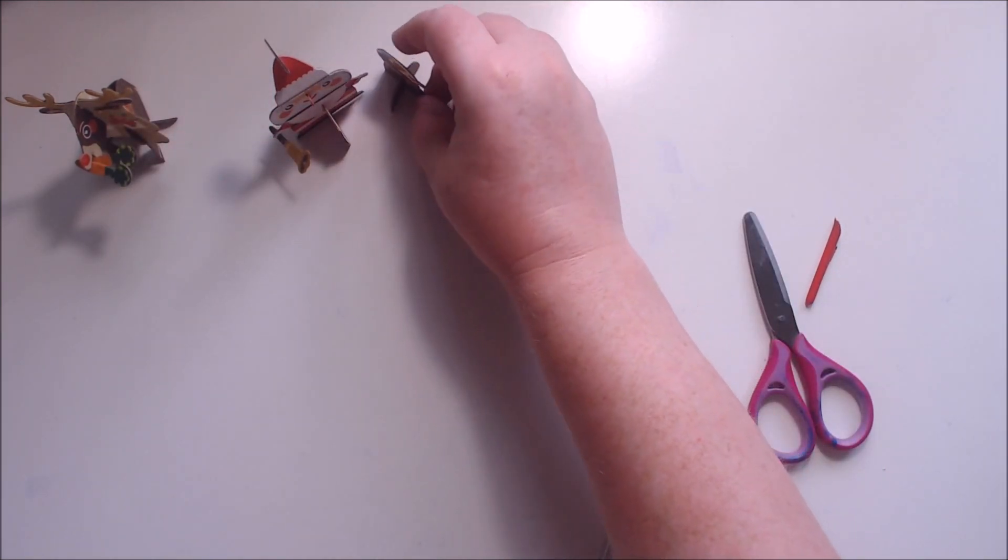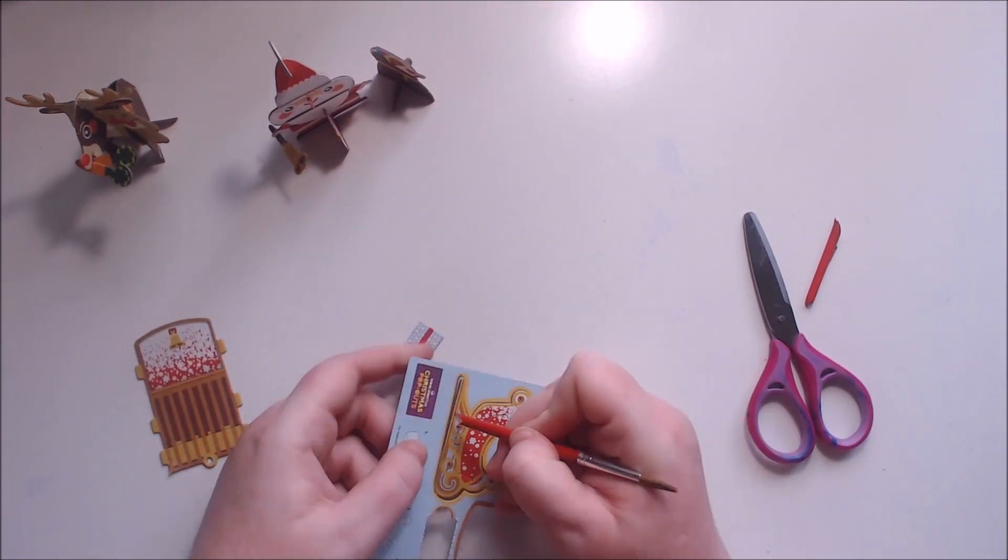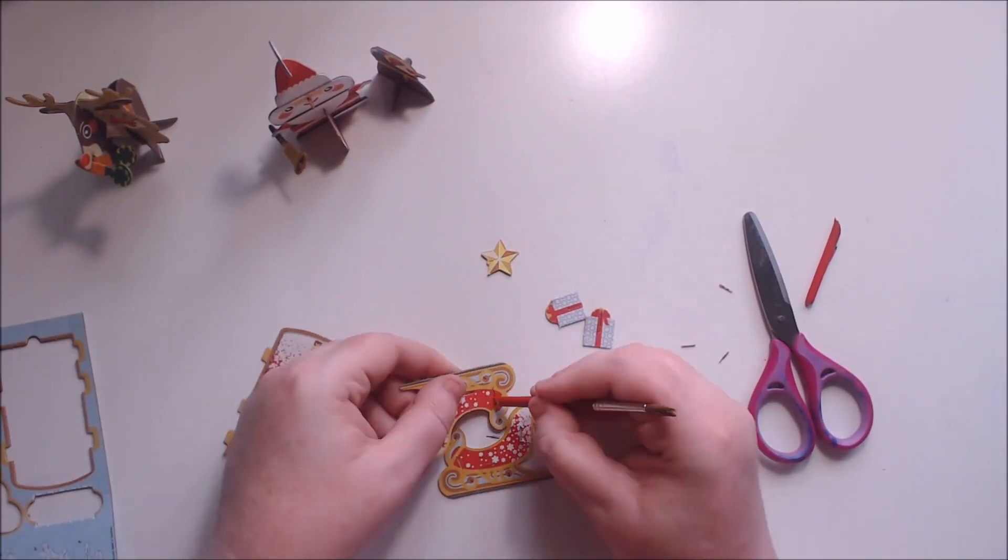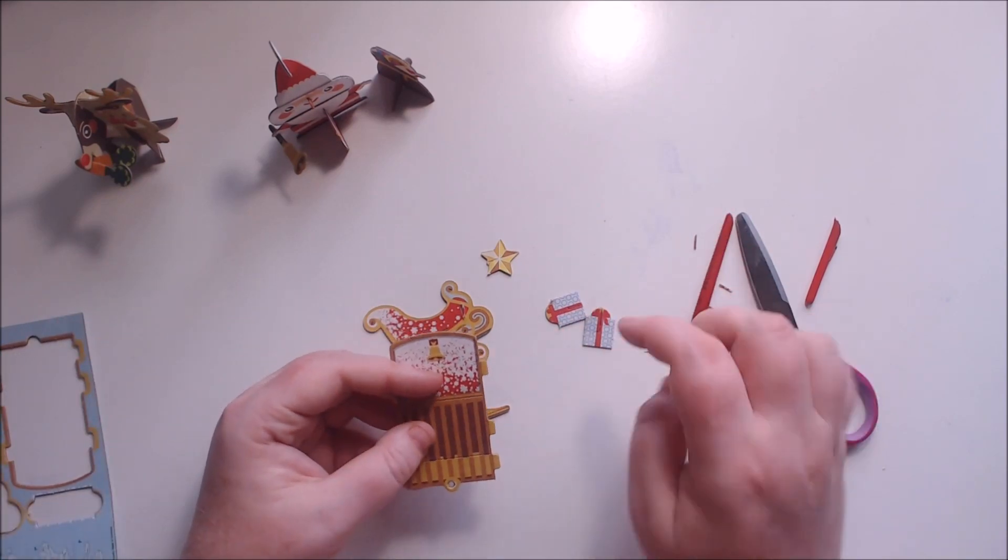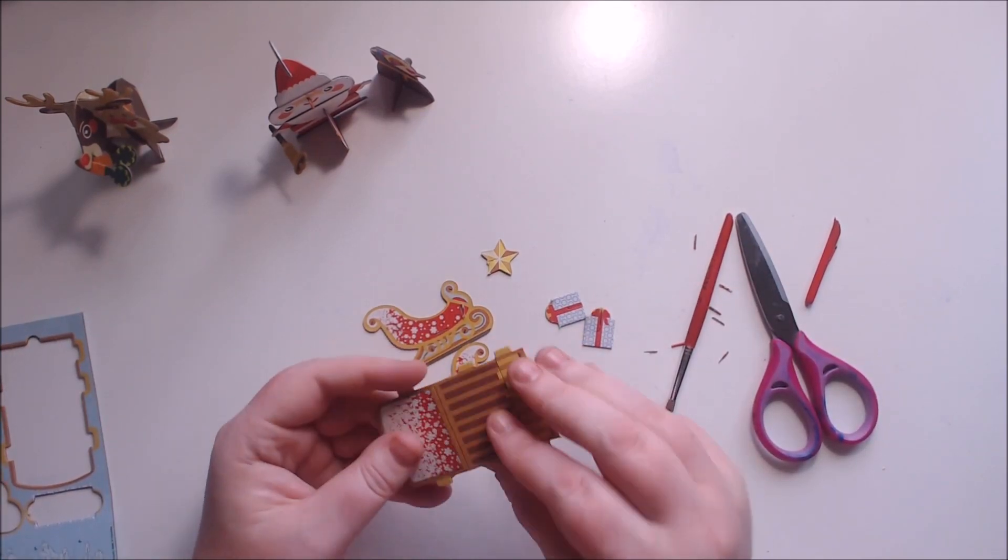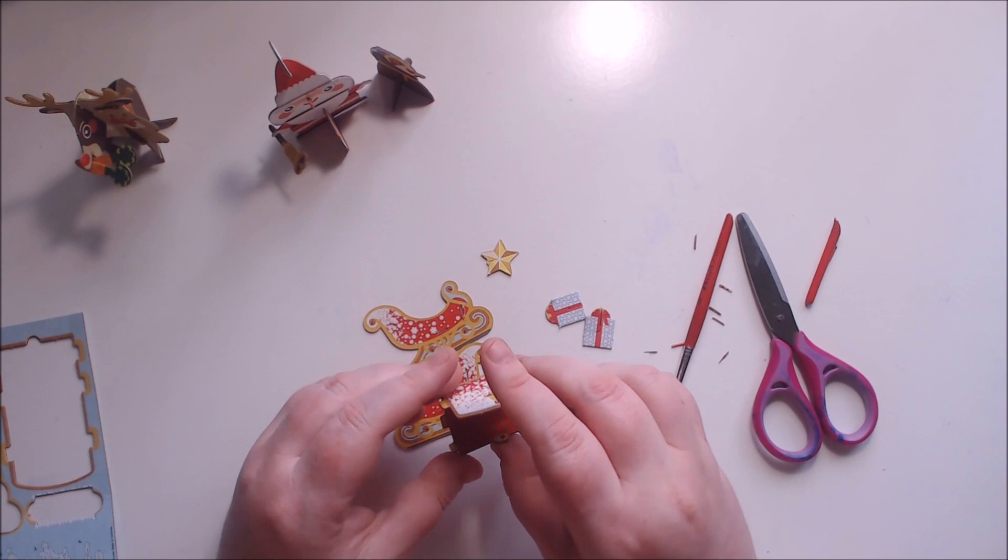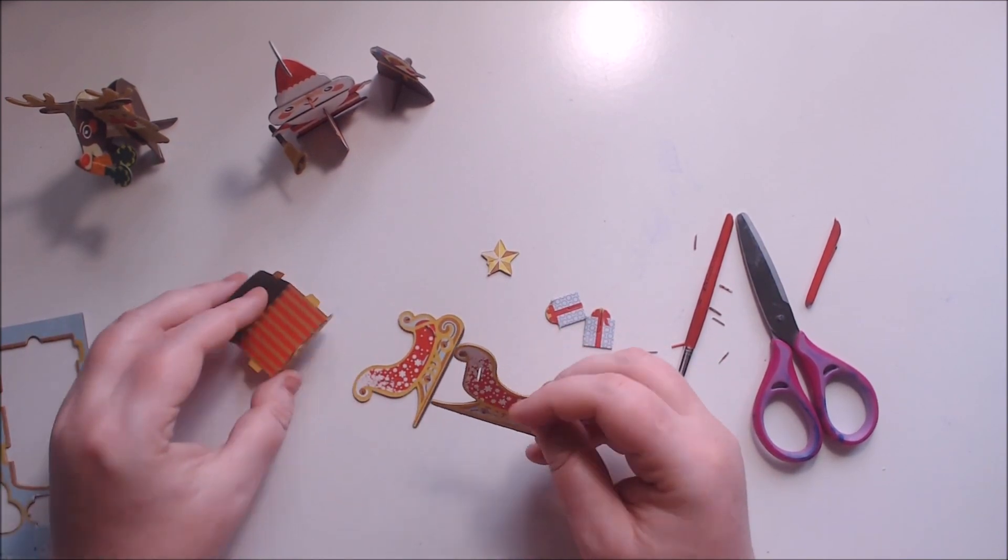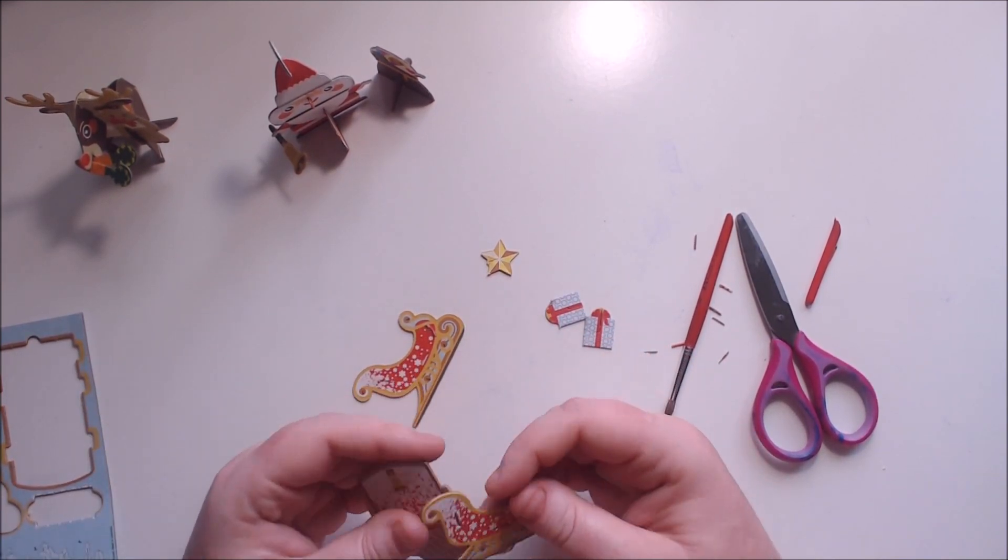Okay, next thing that we're going to be doing is the sleigh. So take the sleigh and be really careful to pop out all of the little tabs and slits inside the sides. Those ones can be a bit tricky, so I spent a bit of time trying to get it to fit together.